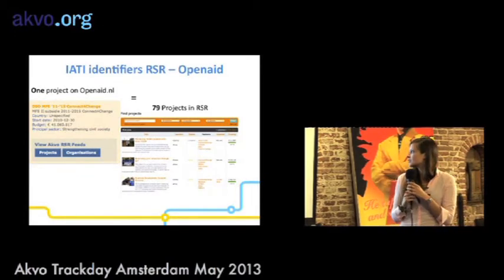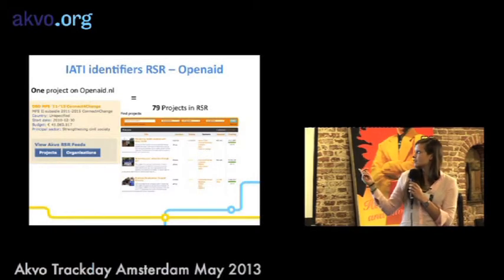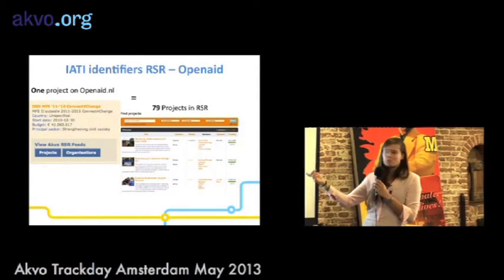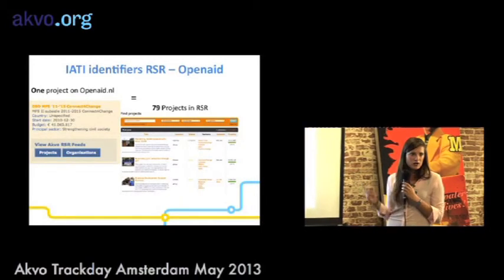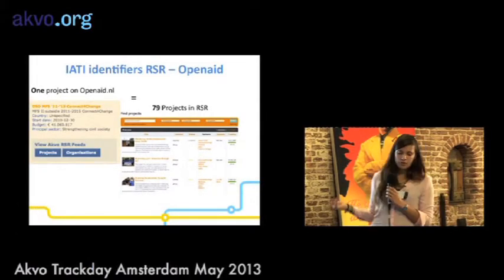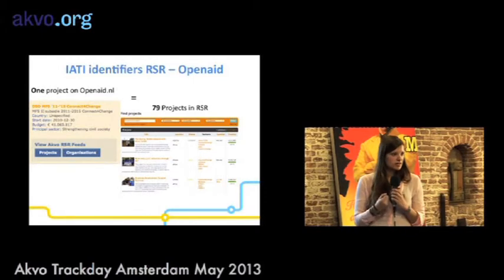Together with five other organizations in the Connect4Change consortium, we decided to put all the consortium's projects online. It's not just one project — there are currently 79 projects in RSR with rich project information that shows much more in depth what is going on. For example, the OpenAid project doesn't show where the project is taking place or who the partners are, but in RSR you can see in which countries it's taking place, who the partners are, and even see updates from the field. We really want to connect that to make the data richer.